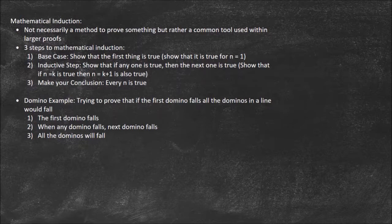Let's think about what we've done in these first two steps. First, we showed that for n equals 1 — the base case — it's true. Then in step 2, we showed that as long as the previous one is true, the next one is true. Together, those let you conclude that it must be true for every n. Because if n equals 1 is true, then n equals 2 is true, then n equals 3, and you can go all the way to infinity.